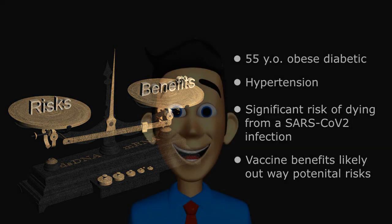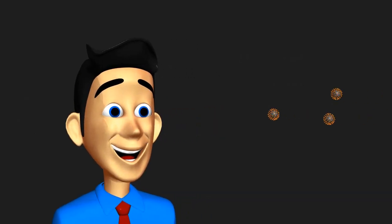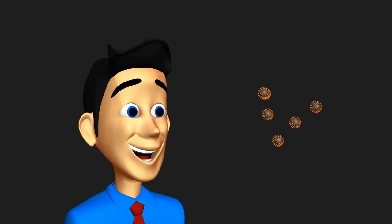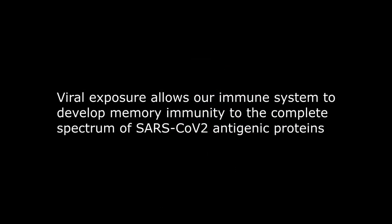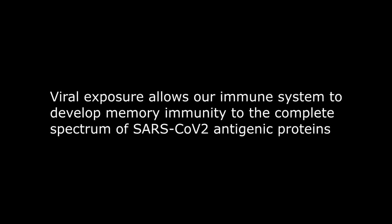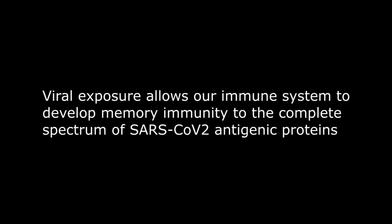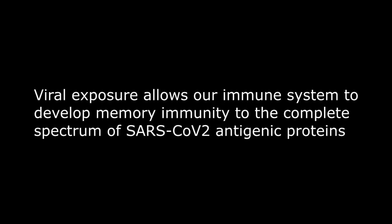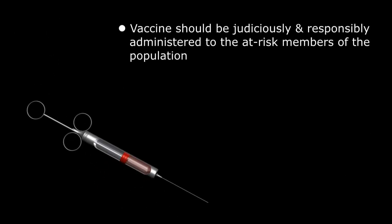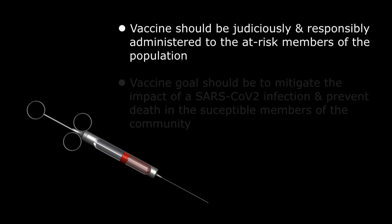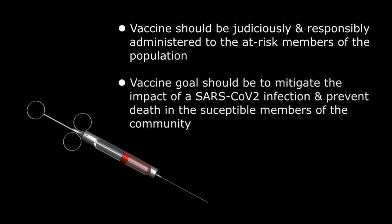Again, the only way through this pandemic is straight through it. Eventually, all of us need to be exposed to the native virus to allow our immune systems to acquire memory immunity to a complete set of SARS-CoV-2 antigenic proteins and fully protect us from subsequent outbreaks. The vaccine should be judiciously and responsibly administered to the at-risk members of the population to mitigate the impact of a SARS-CoV-2 infection and prevent as many as possible from dying in the process. Stay safe and we'll see you next time.